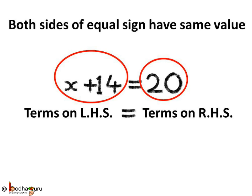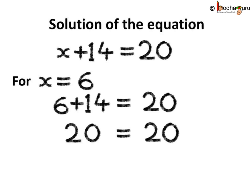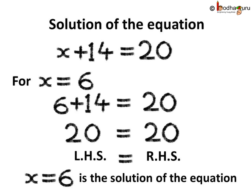This means x plus 14, its value is equal to 20. The equality happens to be true only for certain values of the variable. These values are solutions of the equation. For example, let us put x equal to 6 in the equation x plus 14 equal to 20. On the LHS we get 6 plus 14, which gives 20. So LHS equal to RHS, which is equal to 20. Hence x equal to 6 is the solution of this equation.